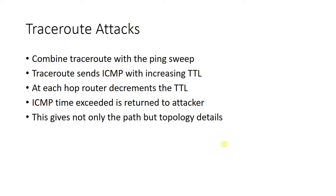Traceroute can add to an attacker's network discovery. Traceroute sends an ICMP echo request to a destination IP address with the TTL value initially set to 1. At the first routed hop, the TTL expires and the router sends an ICMP time exceeded message back to the sender. The router is added to the list of layer 3 hops. The request is then sent again with a new TTL of 2, and the next layer 3 device decrements the TTL, sends an ICMP time exceeded message back to the sender, and the process repeats. This provides both path information and details about network topology, including IP subnet information.